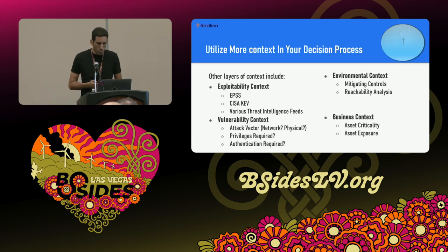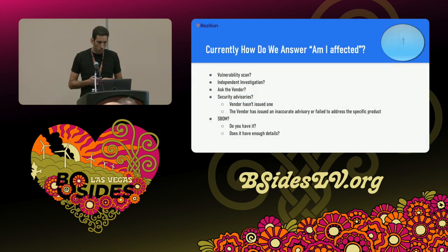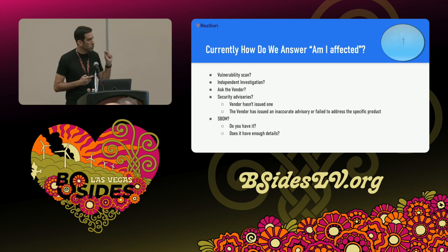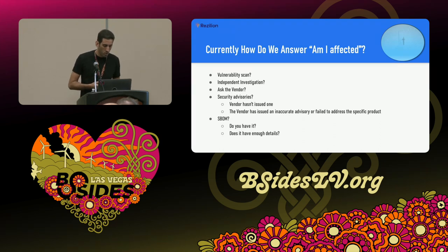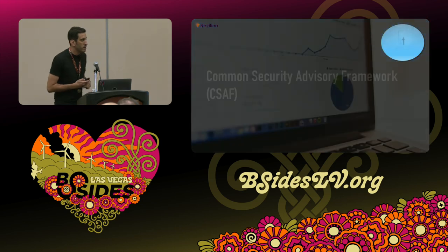All of this is good, but it's not really actionable unless we have automation to make it scale. Currently, how do we determine if we're affected? We can run a vulnerability scan, but it's noisy and not always reliable. Independent investigation is time-consuming. Security advisories are useful but not always available and not easily automatable. So we need a better approach.